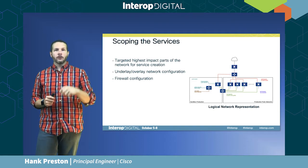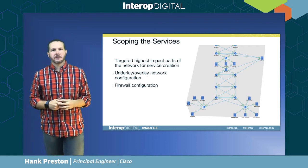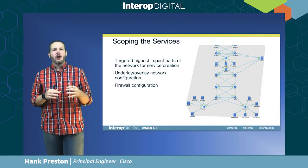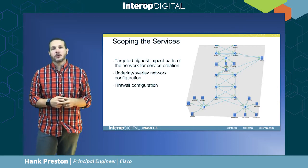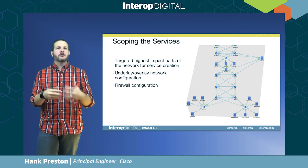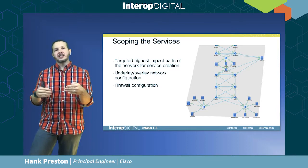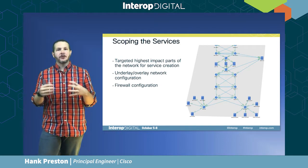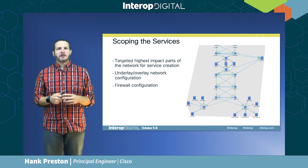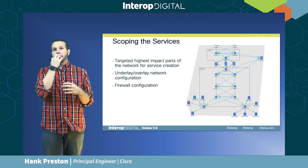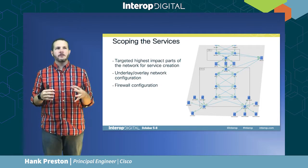We targeted the highest-impact areas: the underlay and overlay. For the underlay, I wanted to automate all switch-to-switch links making up the physical fabric, the compute environment running on Cisco UCS, all the way down into physical network adapters connecting into individual server components, as well as the VMware virtual switching layer. I wanted to model this out into what we call a VLAN fabric — a Layer 2 fabric into which we place switches, routers, firewalls, virtual switches from VMware, and physical compute environments.